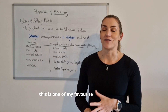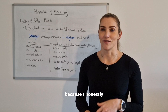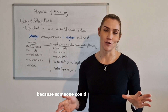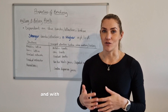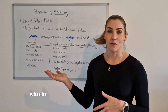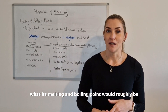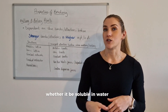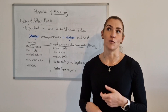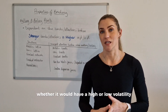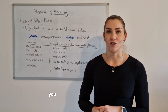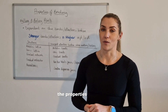This is one of my favourite bits of chemistry because it honestly feels like some kind of cheat code to understanding the world. Someone could show you a molecule and with your knowledge of the structure and bonding within it you'd be able to work out what its melting and boiling point would roughly be, whether it would be soluble in water, whether it would be very viscous, whether it would have a high or low volatility. To explore all these other properties you can check out my other videos on the properties of bonding.